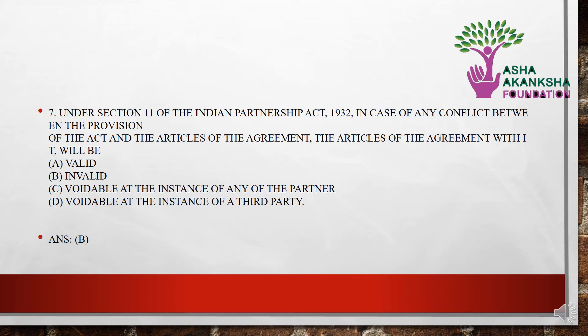The next question is: under Section 11 of the Indian Partnership Act 1932, in case of any conflict between the provision of the Act and the articles of agreement, the articles of agreement will be — (a) valid, (b) invalid, (c) voidable at the instance of any partner, or (d) voidable at the instance of a third party. The correct answer is option B — the articles of agreement will be invalid.